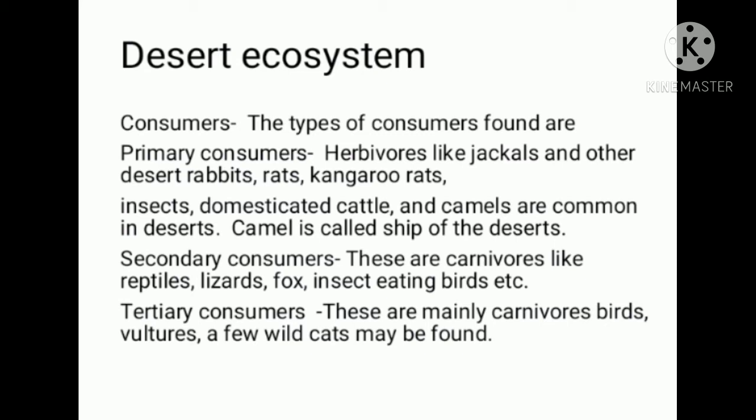If you have primary consumers, these are herbivores. It is called secondary consumers, and then it is called tertiary consumers. These are mainly carnivores and birds. Vultures and a few wild cats may be found. These are the tertiary consumers.